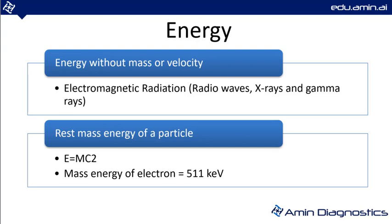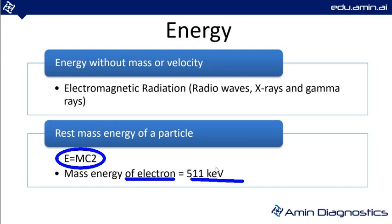Energy without mass or velocity includes electromagnetic radiation such as radio waves, X-rays, and gamma rays. The rest mass energy of a particle is given by the famous equation E = mc². Converting the mass of an electron using this formula gives 511 kilo-electron volts, or 511,000 electron volts.